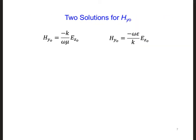Now we have two solutions for HY0, one from Ampere's law and one from Faraday's law. So we can set them equal to each other. So I will write that here. That's a mu, EZ0.